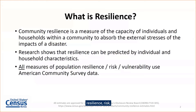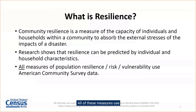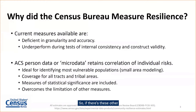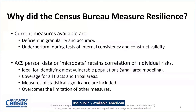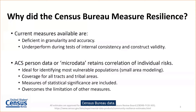There are other measures of resilience, risk, and vulnerability already available to the public, more likely to be developed by the CDC, USC, or NIH. All of these measures use publicly available American Community Survey data. So if there are these other measures of vulnerability and resilience available already, and they're more popular than the community resilience estimates, why did the Census Bureau measure resilience? What we found was that these existing measures use publicly available American Community Survey data, which can sometimes be either deficient in granularity or accuracy, because of the error and the disclosure avoidance and privacy protections that are in publicly available Census Bureau data. These current measures underperform during tests of internal consistency and construct validity.